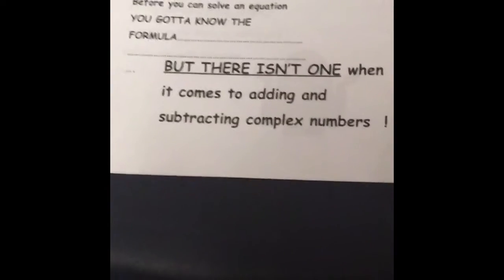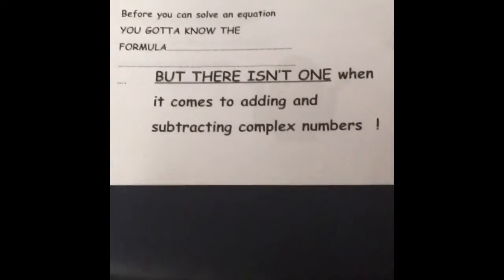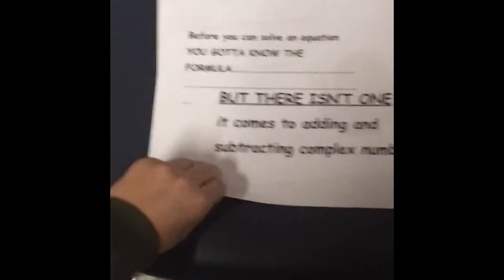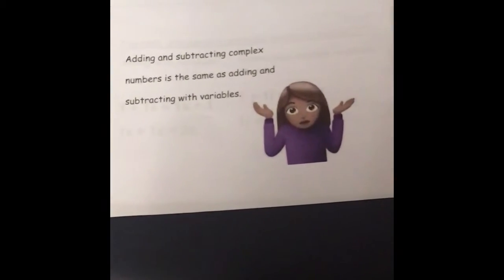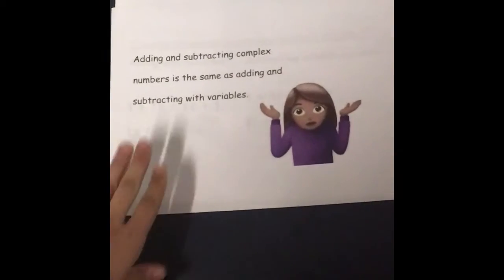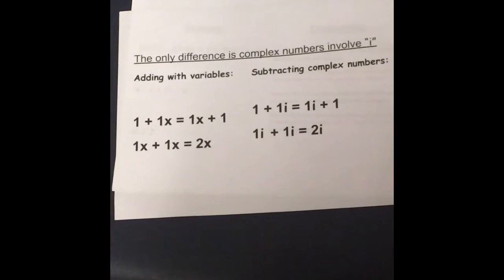Before you can solve the equation, you've got to know the formula. But there isn't one when it comes to adding and subtracting complex numbers. Adding and subtracting complex numbers is the same as adding and subtracting with variables. The only difference is complex numbers involve i.